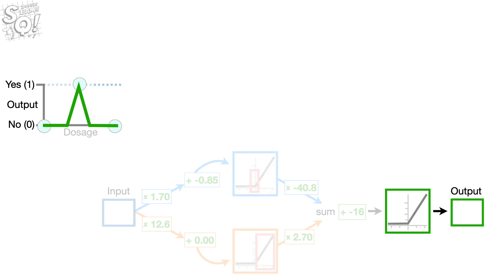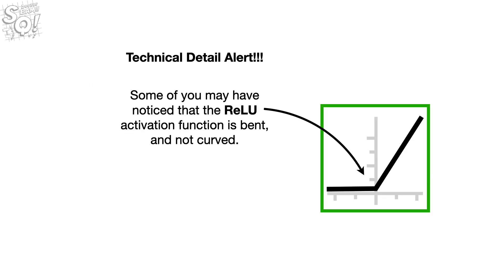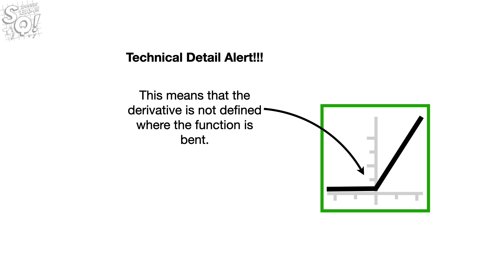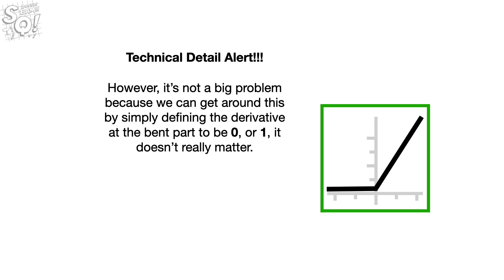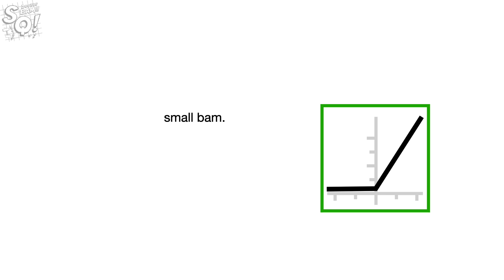Oh no, it's another technical detail alert! Some of you may have noticed that the relu activation function is bent and not curved. This means that the derivative is not defined where the function is bent. And that's a problem, because gradient descent, which we use to estimate the weights and biases, requires a derivative for all points. However, it's not a big problem, because we can get around this by simply defining the derivative at the bent part to be 0 or 1. It doesn't really matter. Small bam!